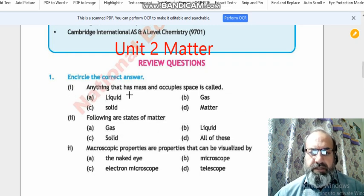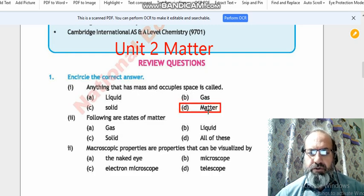Number 1, anything that has mass and occupies space is called matter. Here, option D, that is the correct option, you have to circle it or tick it.